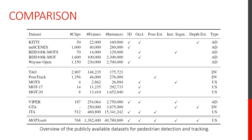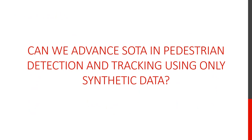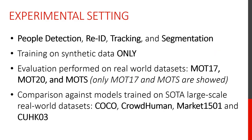ModSynth contains more than 40 million annotated people instances over almost 1.4 million densely annotated frames. Compared to real-world urban surveillance datasets, ModSynth has one order of magnitude more clips, annotated frames and annotated instances. In this paper, we aim to answer a challenging question: can we advance state-of-the-art methods in pedestrian detection and tracking using only synthetic data?